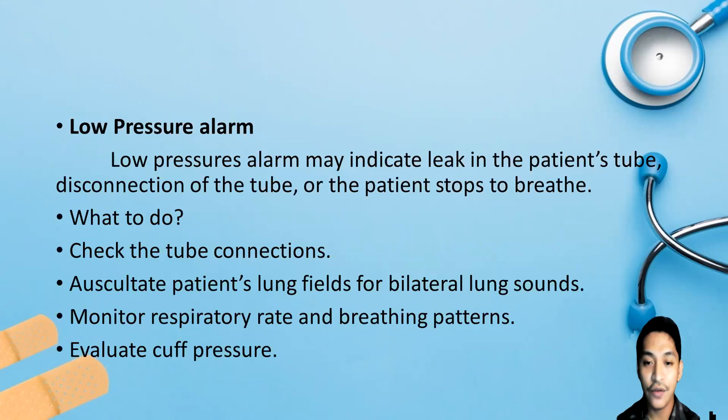A low pressure alarm may indicate a leak in the patient's tube, disconnection of the tube, or the patient has stopped breathing. Management includes: check tube connections, reconnect the patient to the ventilator if necessary, auscultate lung fields for bilateral breath sounds, and monitor respiratory rate and breathing patterns. Evaluate cuff pressure and reinflate if needed.